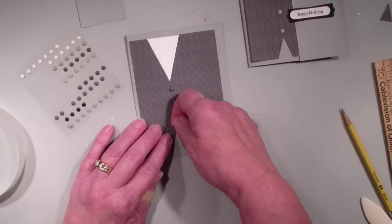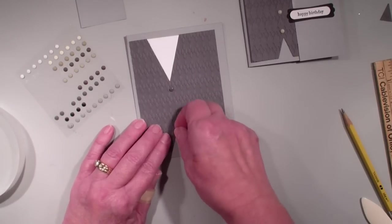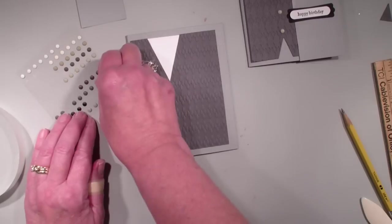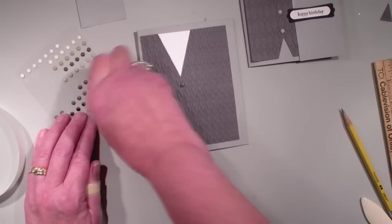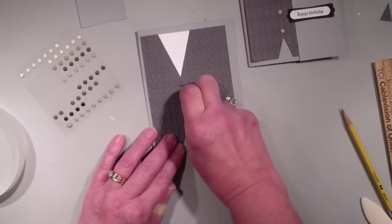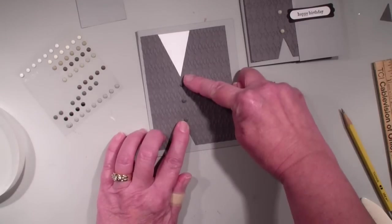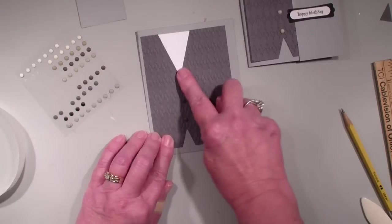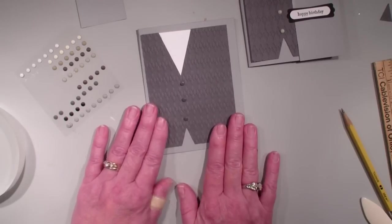Now this works better if you have a paper piercer but of course my paper piercer is nowhere to be found. Also a little tip that if you take your two buttons and put here then you can put the next one in the middle. So I've got that.